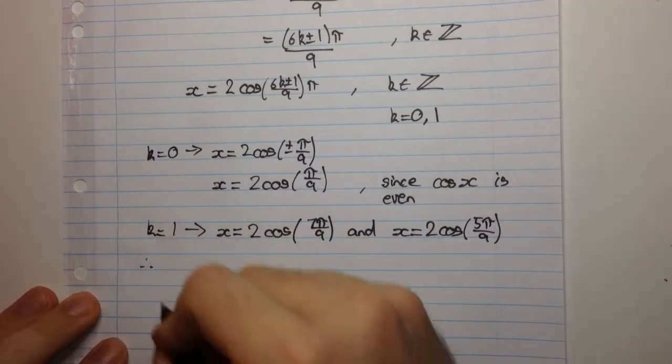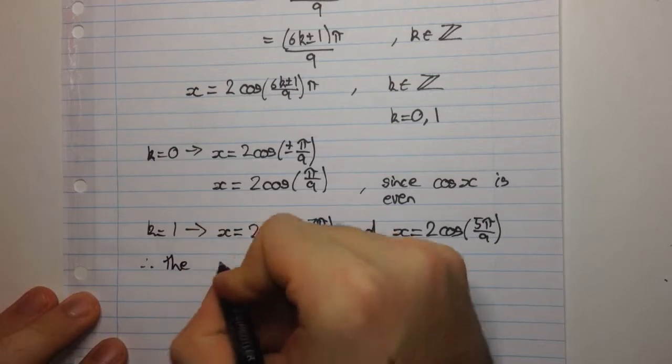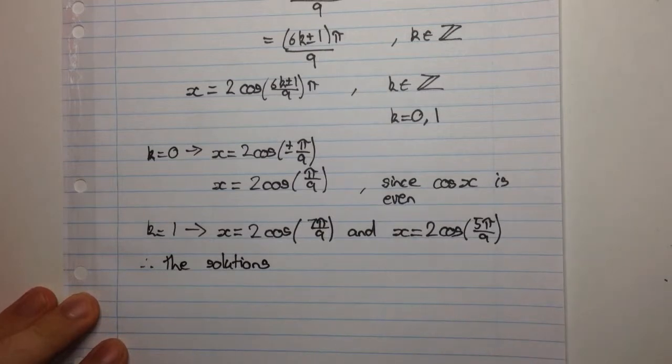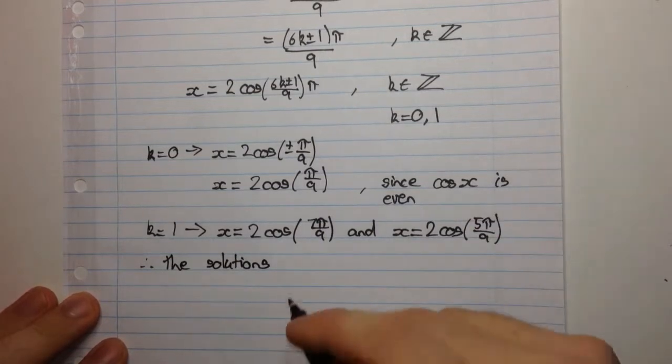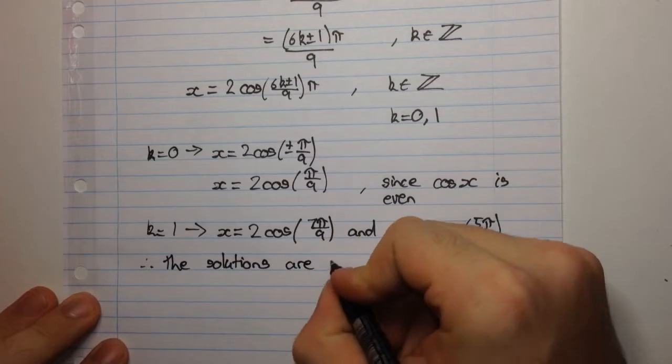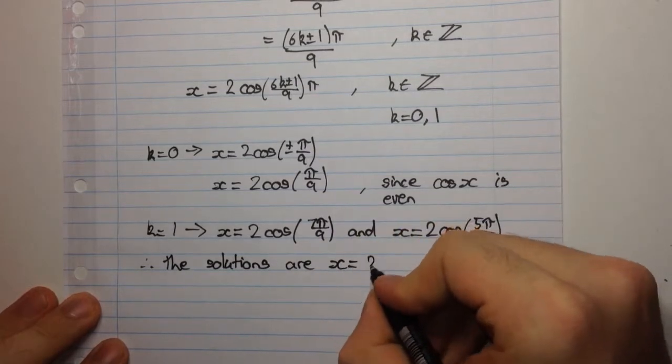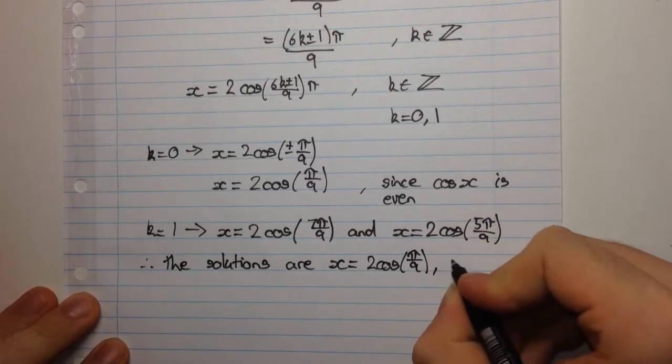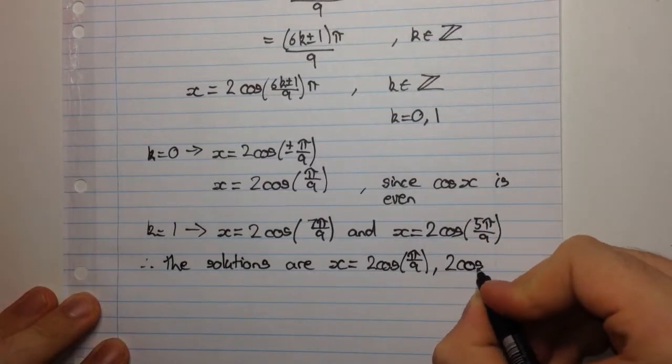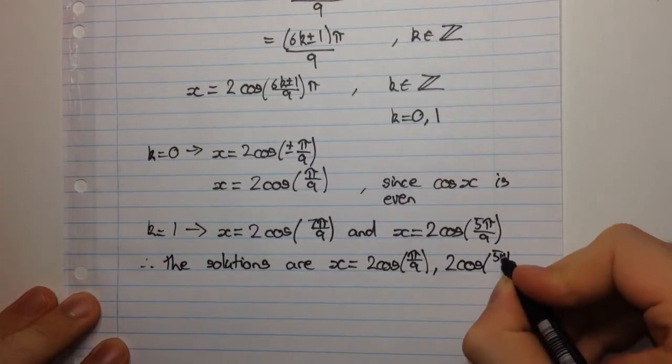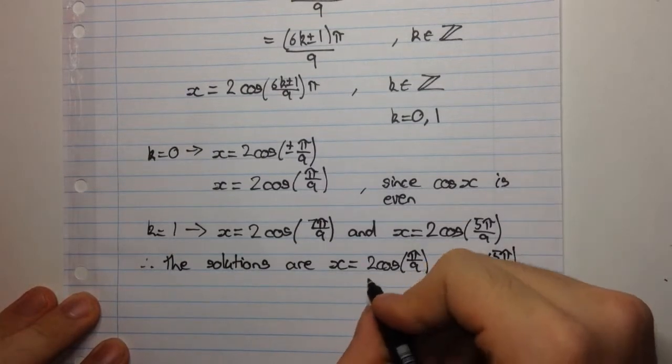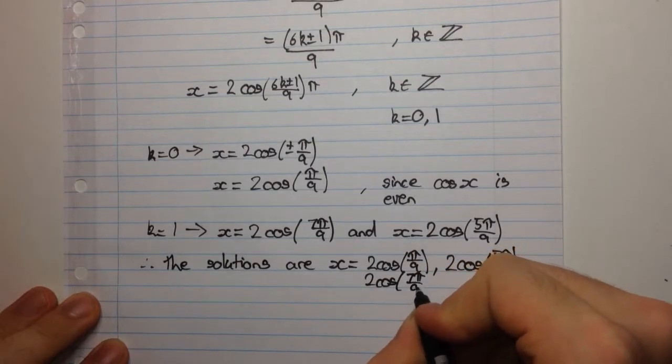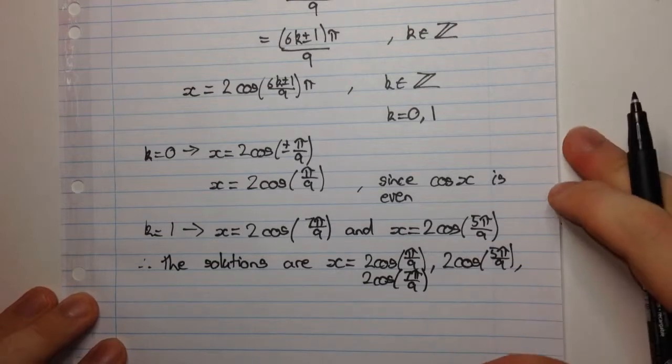So, we can say, therefore, the solutions, and now these solutions are in exact form as the question requested. So, the solutions are x equals 2cos(π/9), 2cos(5π/9), and 2cos(7π/9). And that's the final answer.